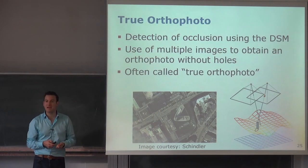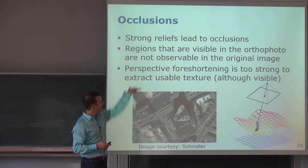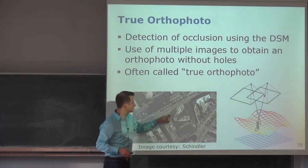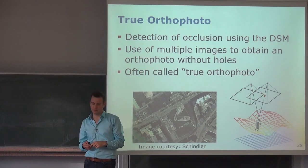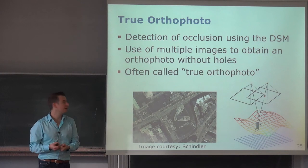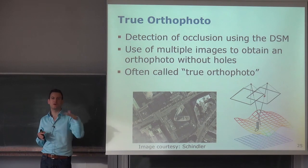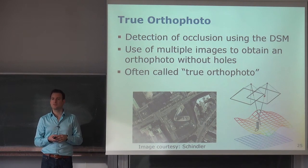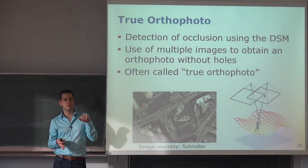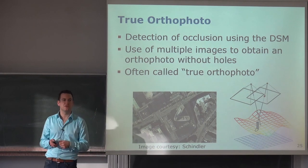The only way to fix occlusions is to take multiple images of the scene from different directions, because otherwise you simply haven't observed the point. Adding a second camera viewpoint allows you to fill those holes. To generate a complete orthophoto you need an accurate digital surface model and typically more than one image to deal with occlusions from 3D objects. If the surface were perfectly planar, one image would be sufficient.